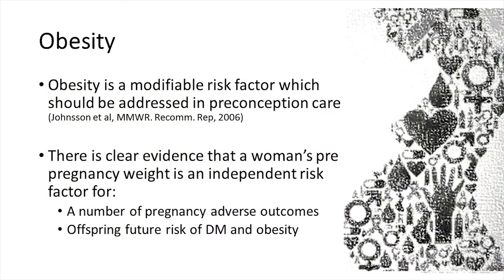Independent of everything else, obesity itself is a risk factor — a modifiable risk factor we should be addressing preconception. There's clear evidence it has an impact on adverse pregnancy outcomes. Increasingly, we're aware that a pre-pregnancy BMI has a significant impact on the offspring's long-term risk of type 2 diabetes and obesity, independent of the genetic risks they inherit from their parents.